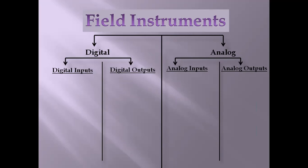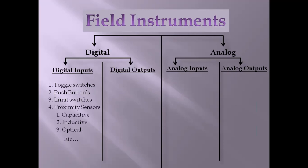Examples of digital inputs include toggle switches, on-off switches, push buttons, and momentary switches — when you press it goes on, when you release it goes off. There are also limit switches and different types of proximity sensors such as capacitive, inductive, and optical sensors for detecting different materials like glass, metal, and steel. These are connected to the PLC as inputs to detect any object.